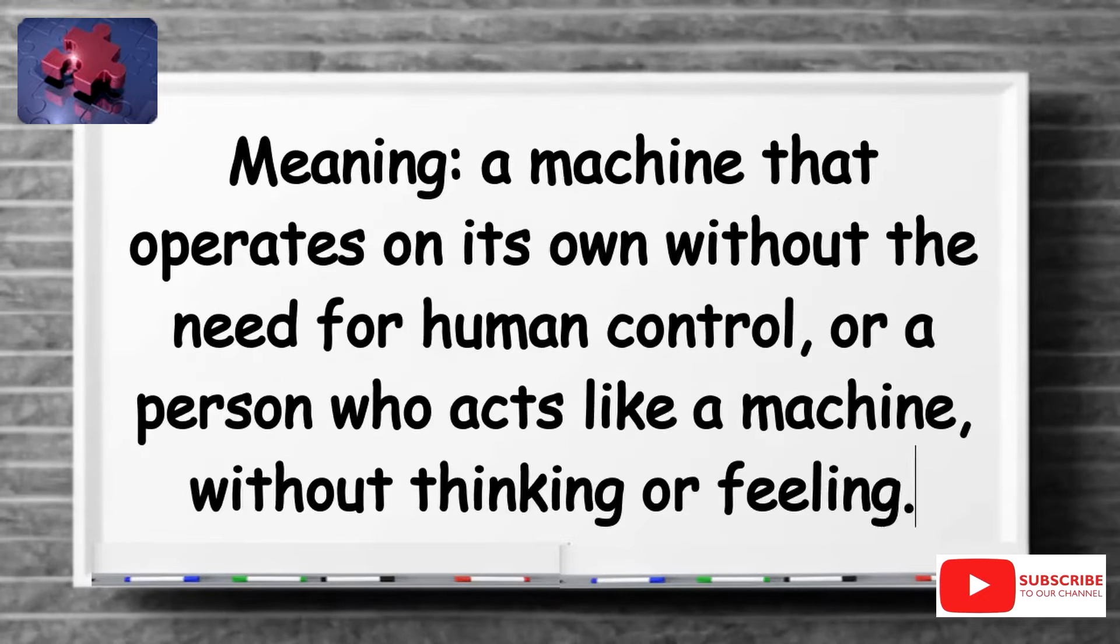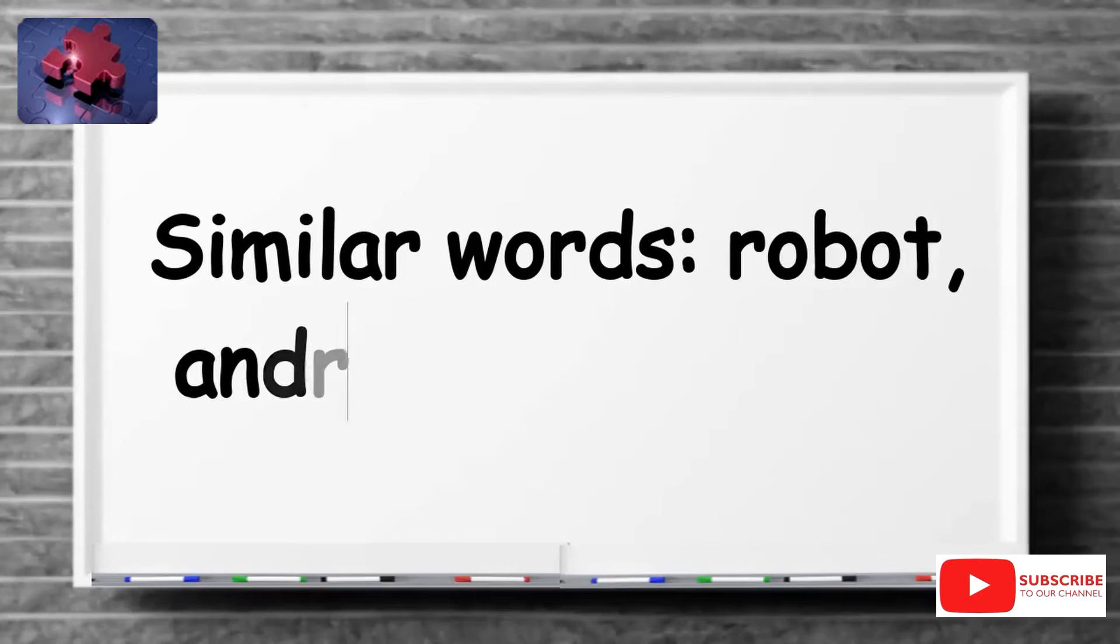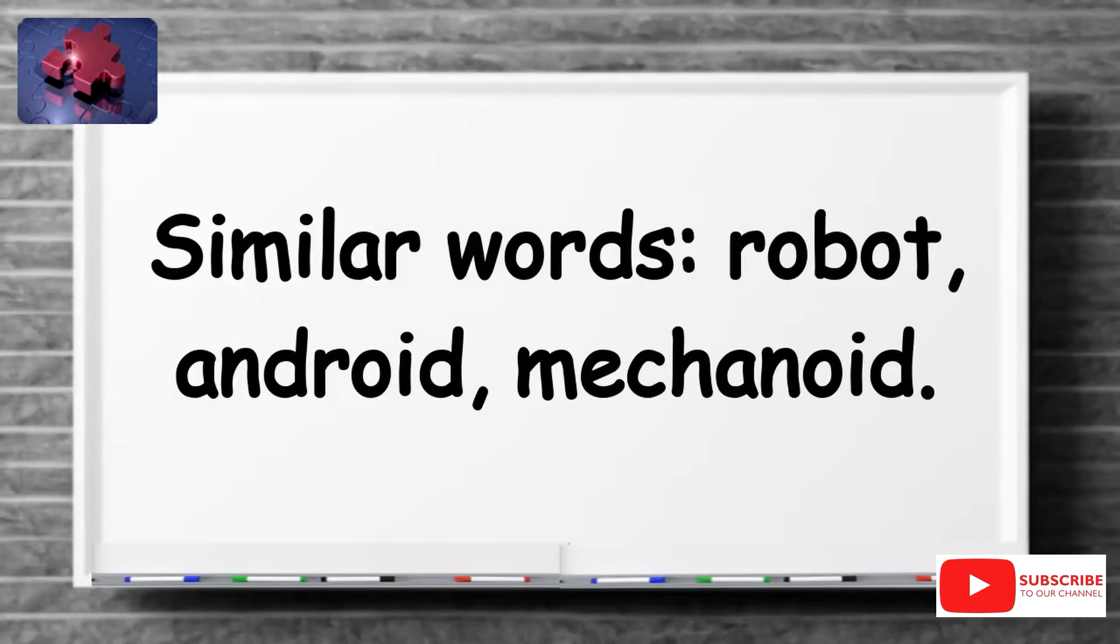Automaton is a machine that operates on its own without the need for human control, or a person who acts like a machine, without thinking or feeling. Similar words include robot, android, and mechanoid.